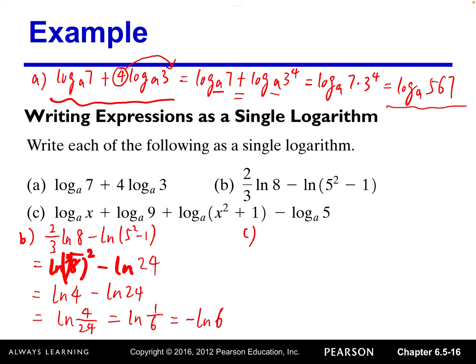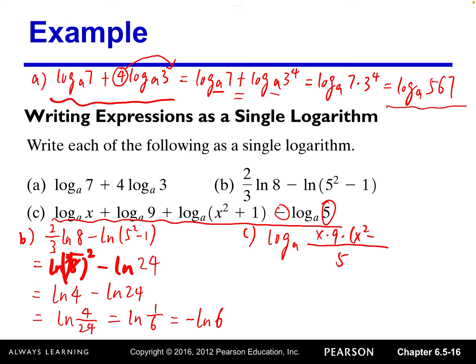Part c is a longer expression. They all have the same base a. All the plus signs go to the numerator as multiplication, and the subtract sign means division — so five will be on the denominator. The other terms — x times nine times x squared plus one — go in the numerator. We reorganize: the coefficient first, then x times x squared plus one. That's how we write it as a single log.